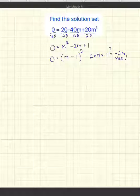Now, if I take the square root of both sides, I get 0 is equal to m minus 1. Or you can think of 0 is equal to m minus 1 times m minus 1, so that means m minus 1 is 0.